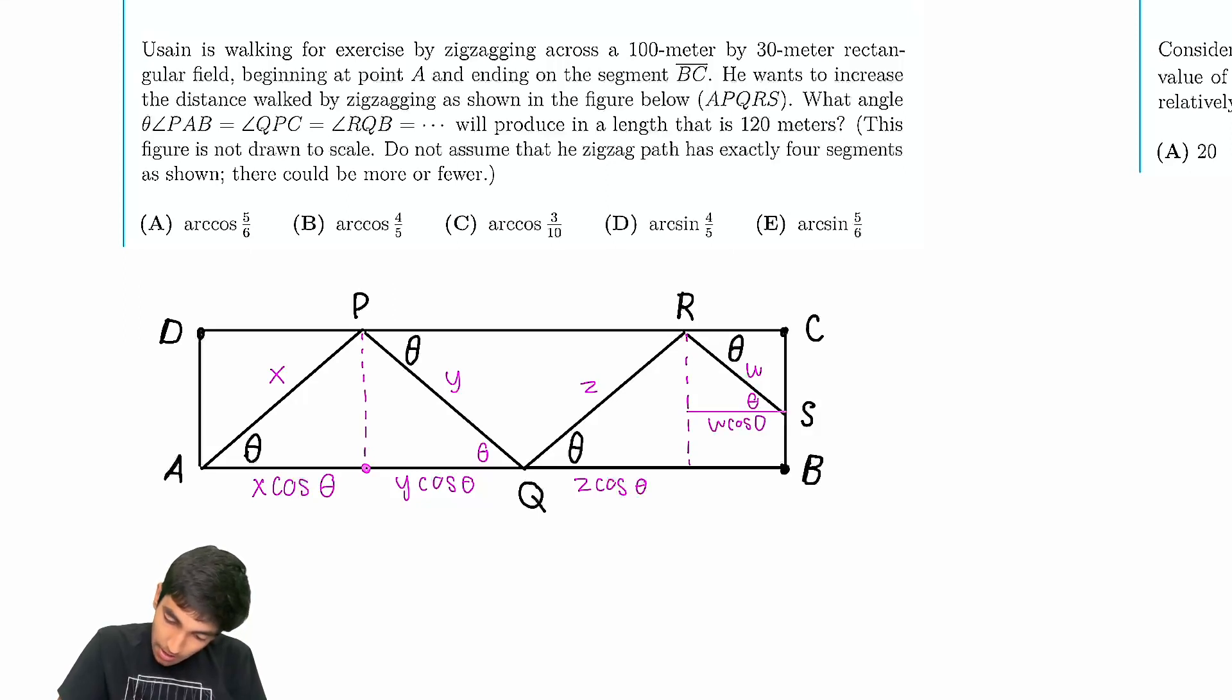This is w cosine theta. So always, this thing will be, you multiply this, the total length of the path, which has to be 120, you multiply that whole thing by cosine of theta to get 100, the total width. Because for each thing, you multiply by cosine theta to get to the width.